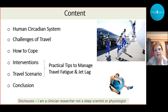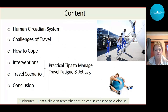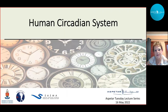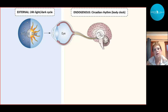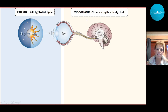A practical travel scenario will also be shown, because these are quite complicated ideas — you will see when we get to west and east and phase advance. Starting with the human circadian system, the external environment plays a role, specifically the light-dark cycle, but more importantly is the endogenous part, the so-called body clock.